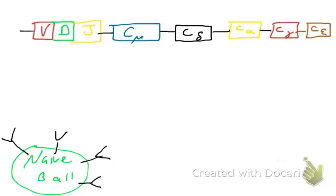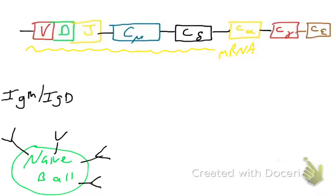Here is a drawing of a naive B cell with immunoglobulin on its surface. In the last video we talked about how the constant mu and constant delta regions of the heavy chain gene locus allow you to produce IgM and IgD at the same time. That is what you find present on the surface of naive B cells, and that is membrane-bound immunoglobulin.